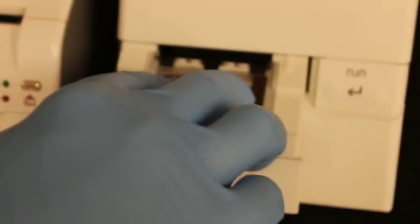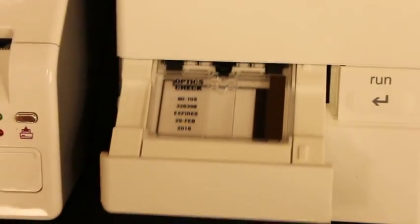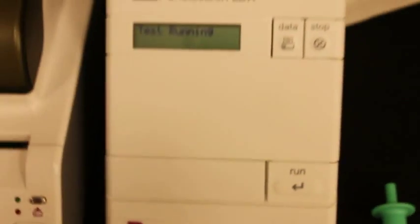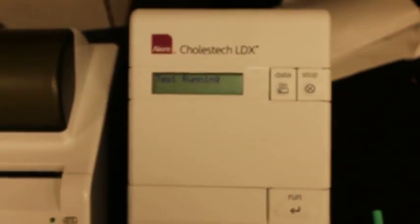It gets placed into the machine. Make sure you push it down so that it sits flat, and hit run. And then it will say test running, and it will go through a period and give back the results of the calibration.